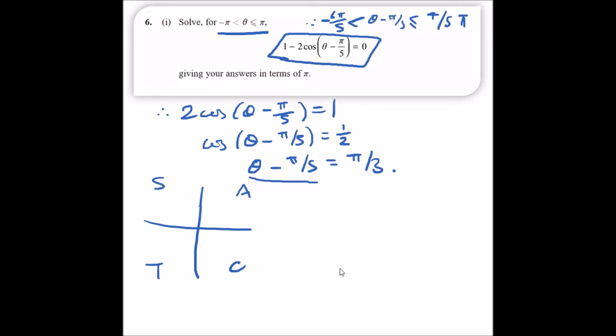Because we're using cos, we use C, and because A indicates all, we always start from here. So we have an angle here which is worth π/3, and an angle here which is worth π/3.